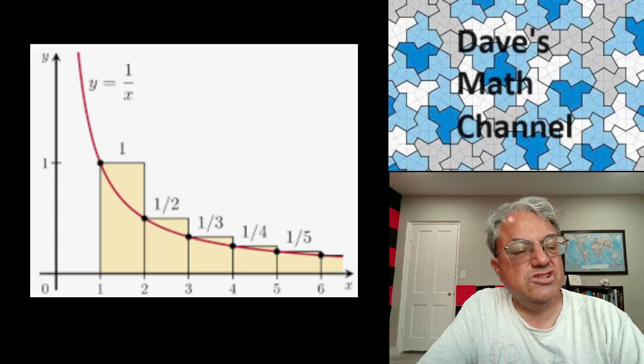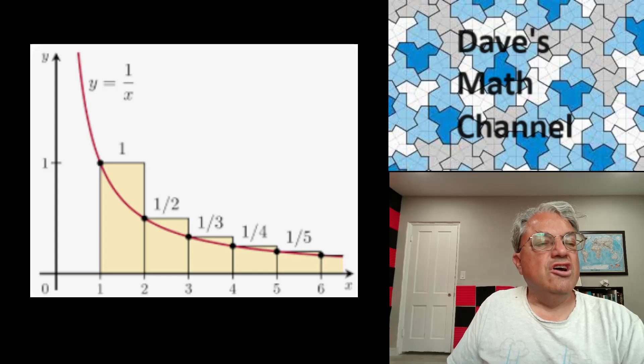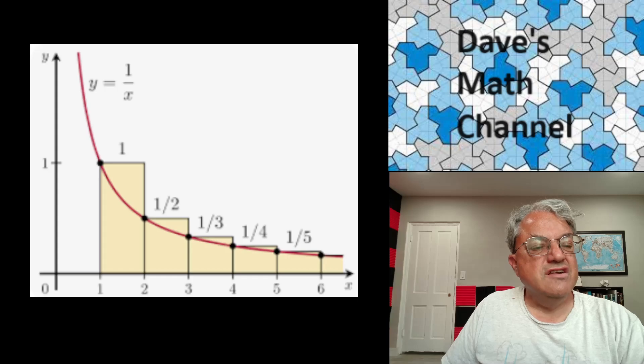So just to get an idea how you derive the asymptotic formula I showed you, this is what's called the integral test. So we have this function. Now I'm sort of getting into calculus here. But for those of you who know a little bit of calculus, the natural logarithm is defined as the area under the hyperbola y equals 1 over x. So if you go from 1 to 6, in this diagram, the area under the red curve from x equals 1 to x equals 6 is just the natural logarithm of 6, ln 6.